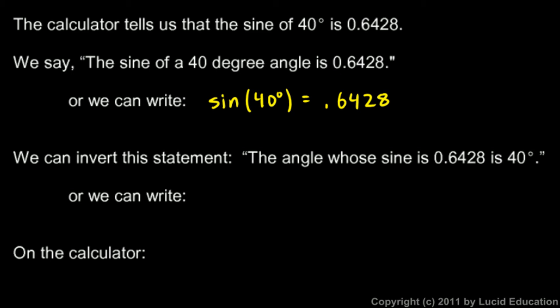Now, we can take this statement, this statement in English here, or this mathematical statement, and we can invert it. Instead of saying the sine of a 40 degree angle is 0.6428, we can say the angle whose sine is 0.6428 is 40 degrees.